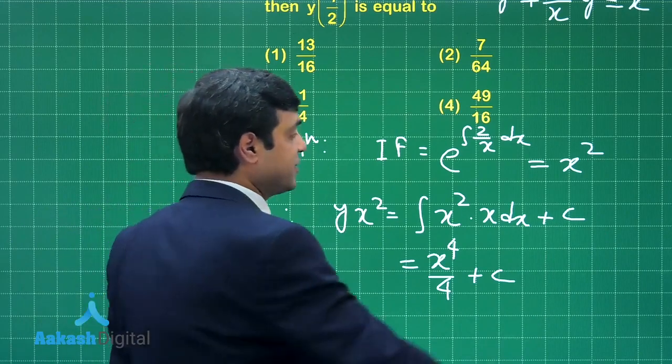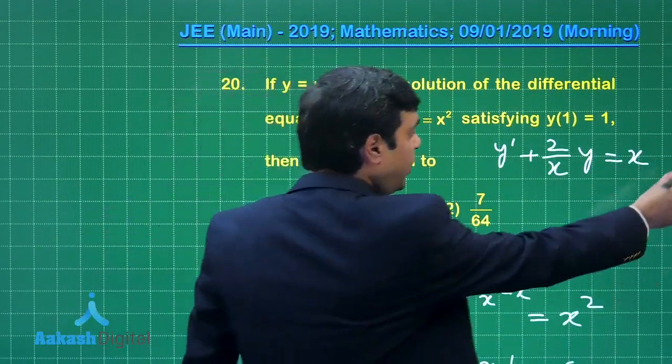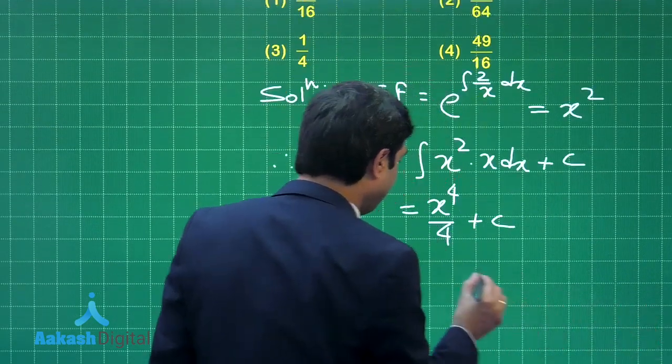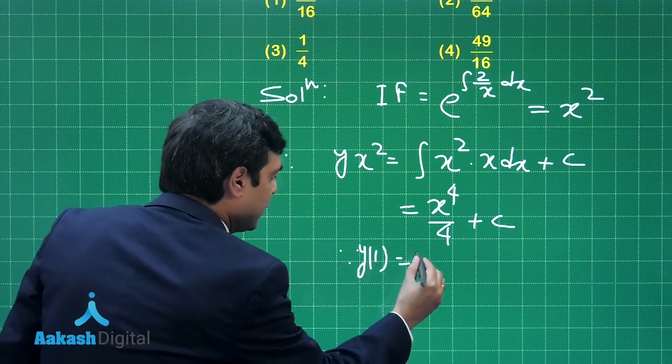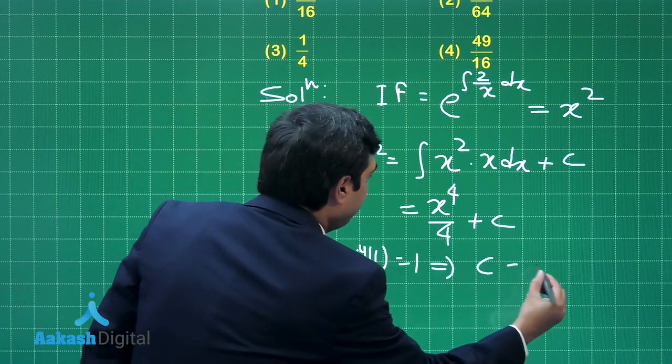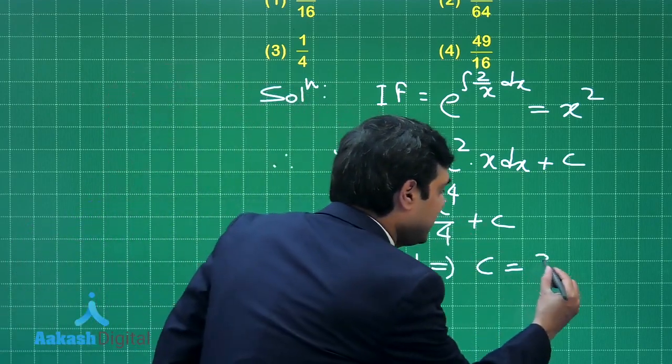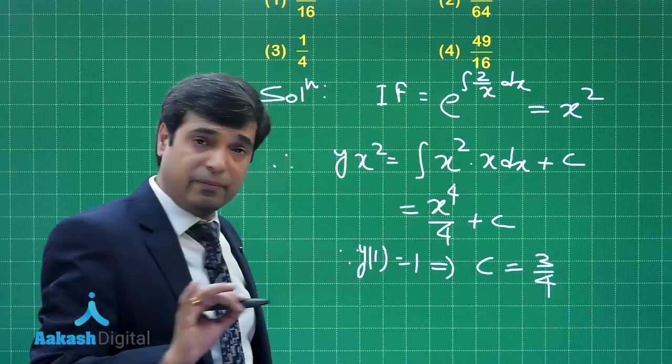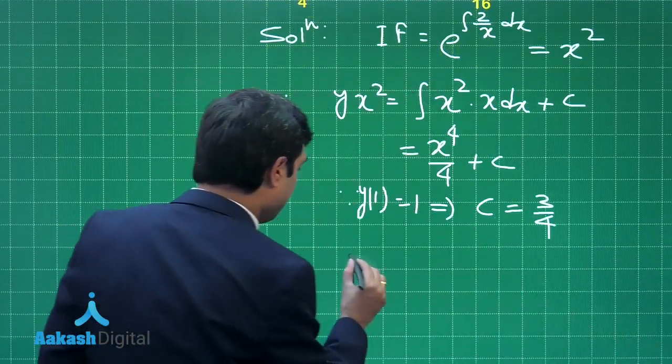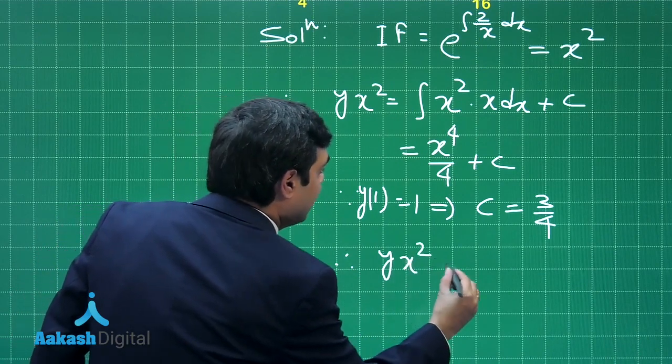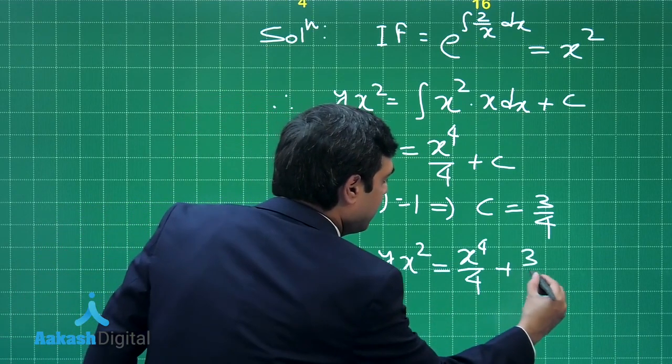Now one initial value condition is given, which is y(1) = 1. So put x = 1 and y = 1 here. Since y(1) = 1, we get the value of c from here: 1 = 1/4 + c, that is c = 3/4. This is clear. Put it back to get the equation: yx² = x⁴/4 + 3/4.